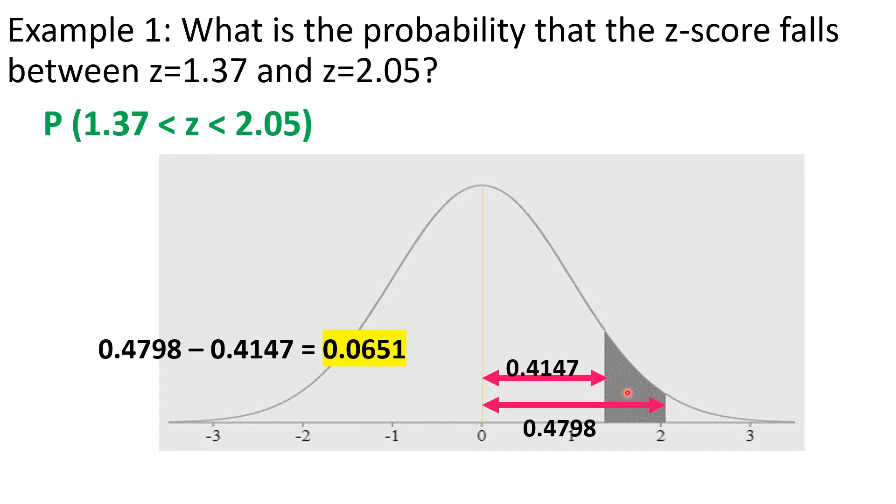We've known that that area, the shaded region, is equal to 0.0651. And of course, that is the value of the probability. So the probability that the z-score falls between the z-values 1.37 and 2.05 is only 0.0651. That is far from the certainty of the event or the sureness that the event will happen, which is 1.0. The total area of this is 1 or 1.0, so the probability is only 0.0651.